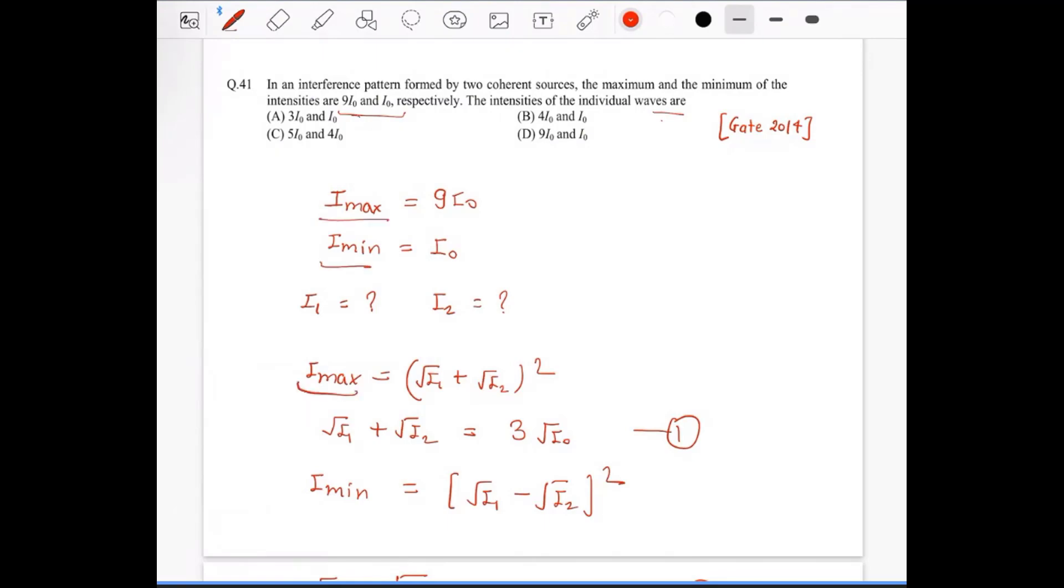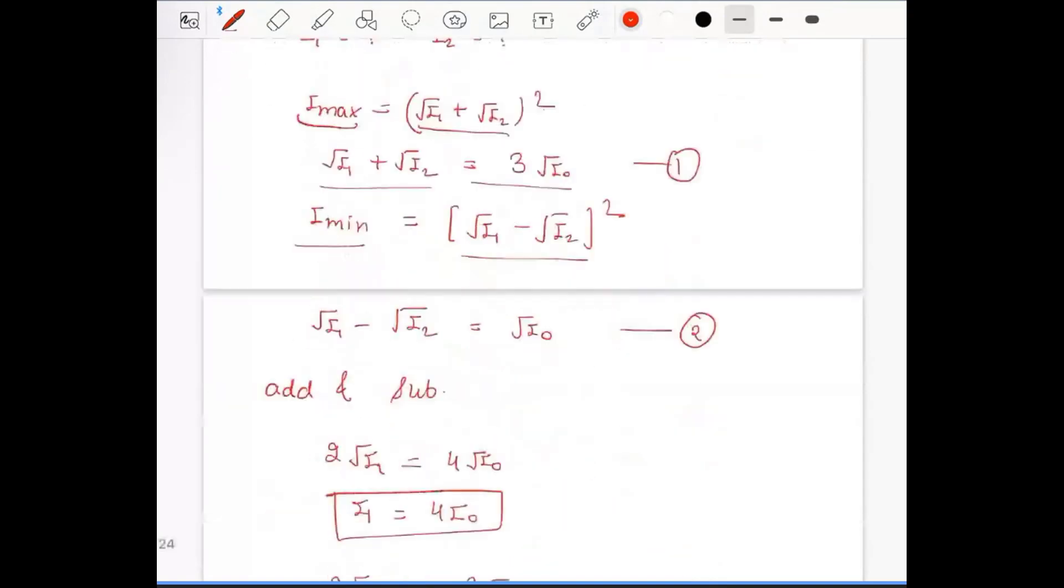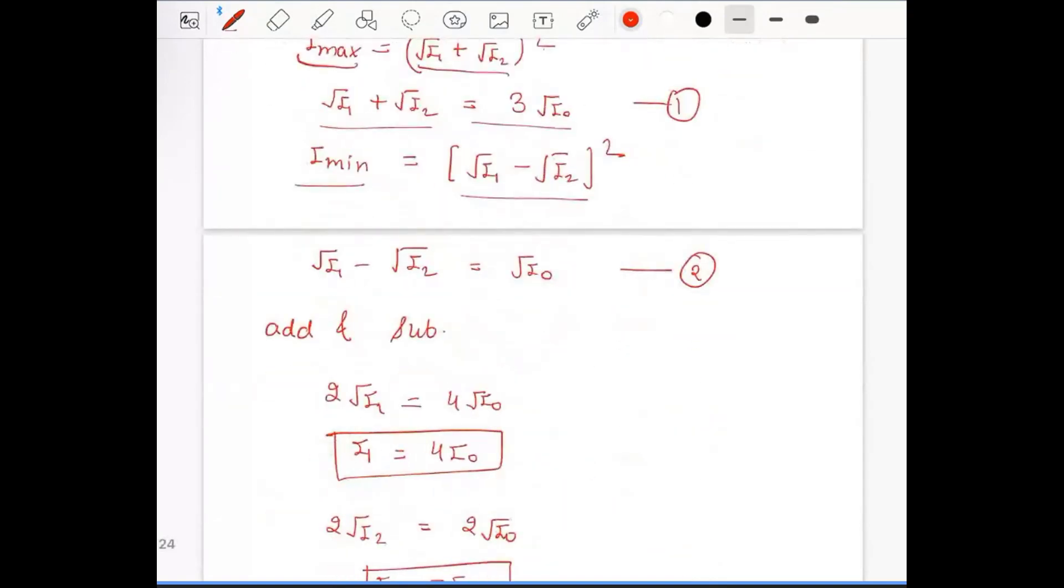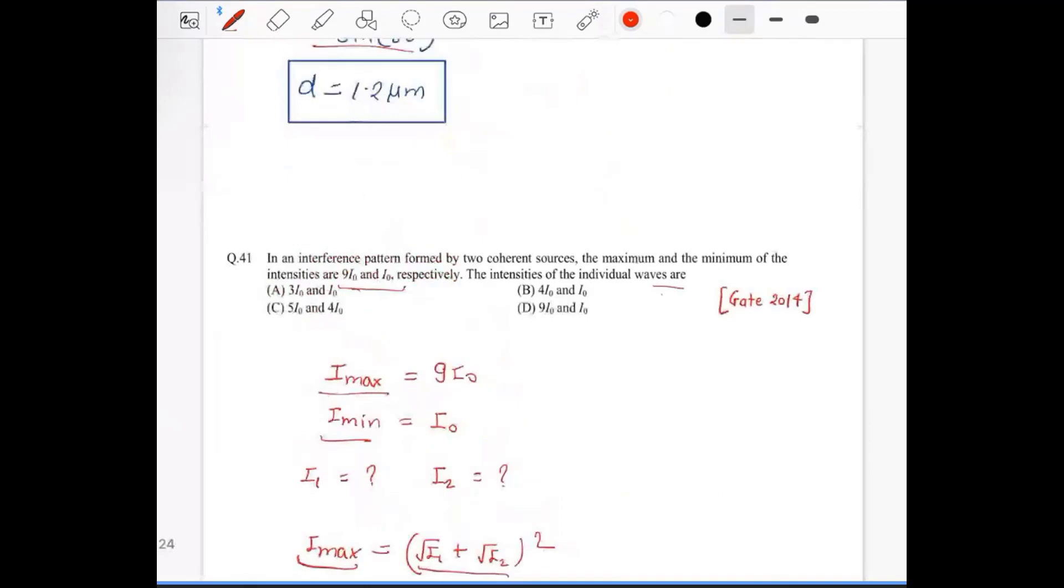And then we just take square root on both sides. Similarly, we put equals to I min and take the square root on both sides. We just add and subtract these two equations - we will get I₁ and I₂ as 4I₀ and I₀.